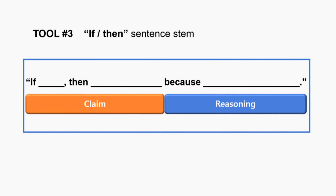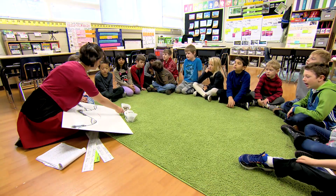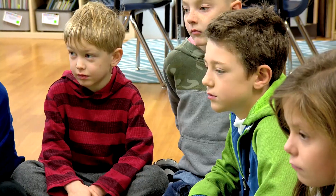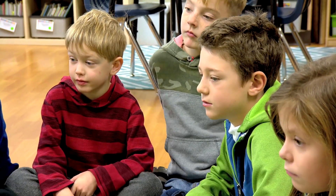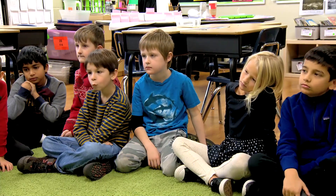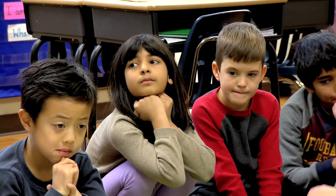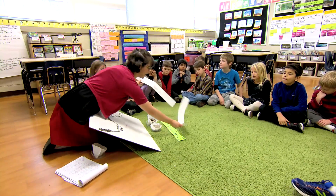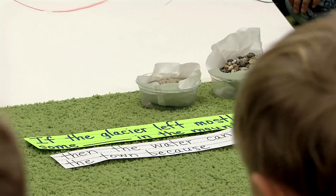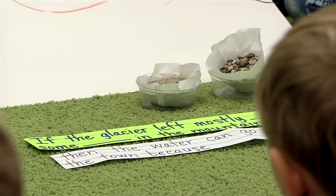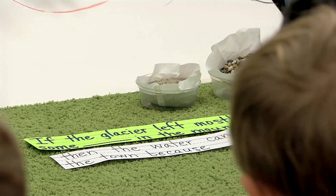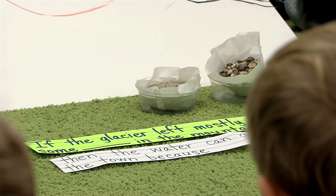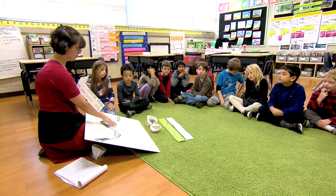What if this mountain was mostly made out of pebbles, or mainly just sand? We've done some experiments to help us understand how water flows through some of these materials, and now we're thinking about this claim: if the glacier left mostly some kind of this material, then the water can go faster or slower to the town.